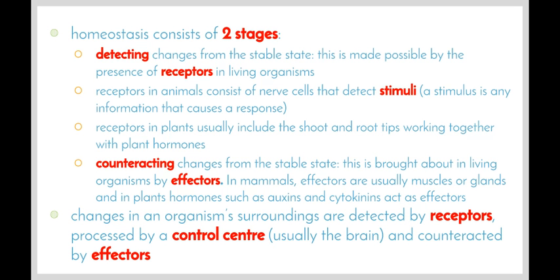For humans, stimuli can be things like the amount of light, hearing a sound, feeling pressure on your skin, or some heat, and they're detected by specific receptors. Light is detected by photoreceptors in our eye, and temperature is detected by thermoreceptors in our skin. Receptors in plants usually include the shoot and root tips, working together with plant hormones.